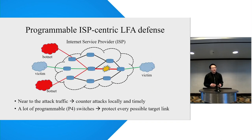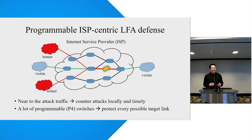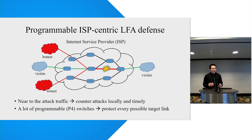In this respect, the programmable ISP network — that is the Internet Service Provider network — can be a better choice. The ISP network has many advantages. First, they are near to attack traffic, so they have the potential to counter attacks locally and in a timely manner. Second, the ISP network owns a large number of devices, so they can protect every possible target link with the help of the programmable switch, that is the P4 switch.